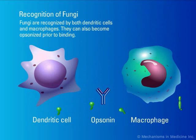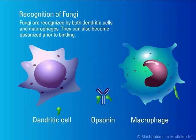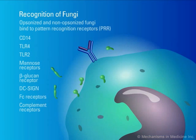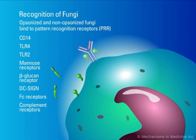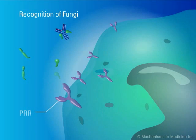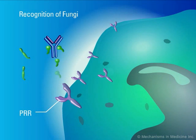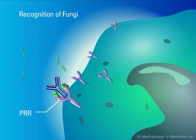Fungi and fungal particles bind to opsonins. Fungi may bind to opsonins such as complement and antibodies. Recognition of fungi is facilitated by pattern recognition and opsonic receptors. Opsonized and non-opsonized fungi and fungal particles bind to dendritic cells and macrophages.